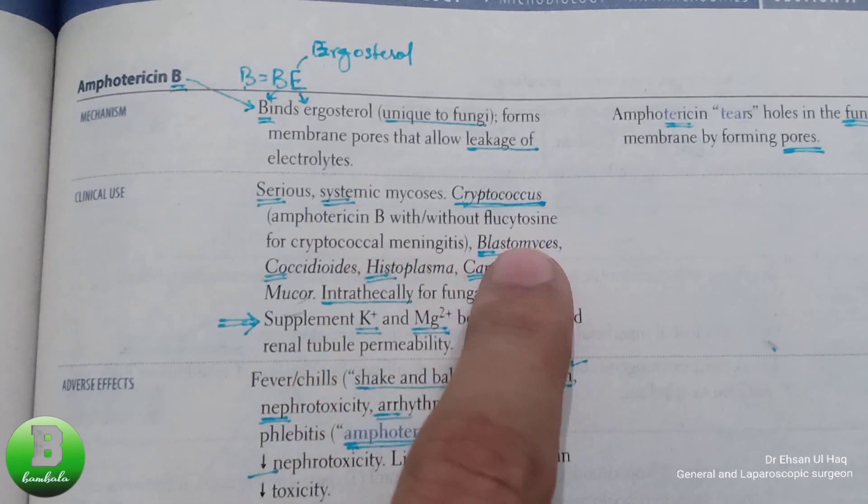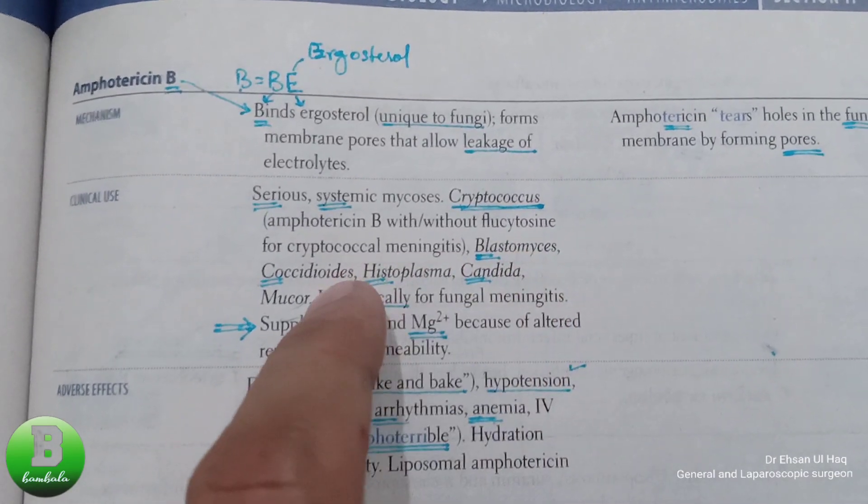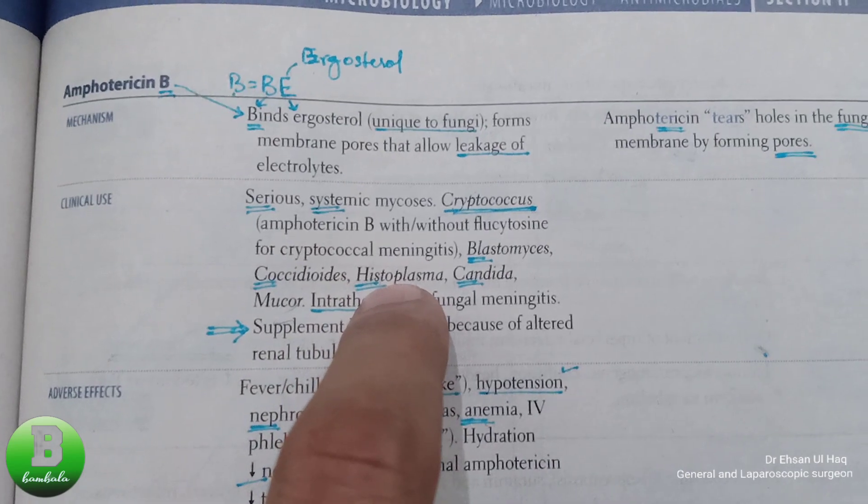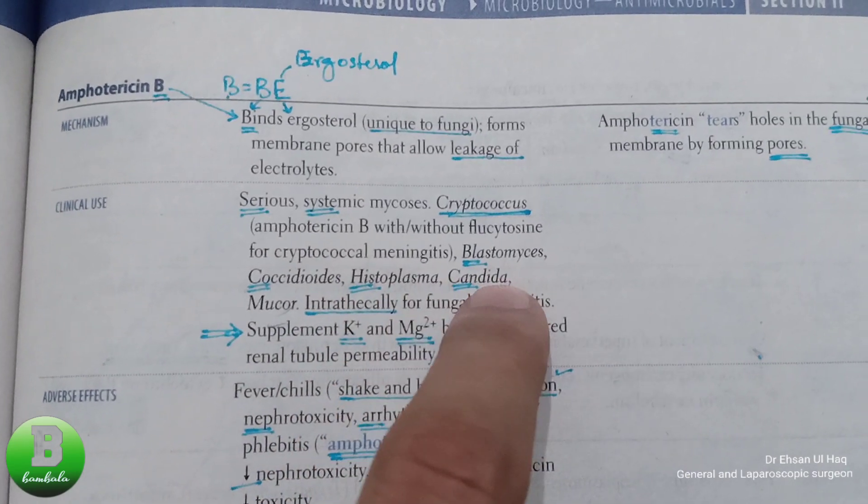For cryptococcal meningitis and encephalitis with soap bubble lesions, we use Amphotericin B along with flucytosine. Other organisms covered include blastomyces and histoplasma.